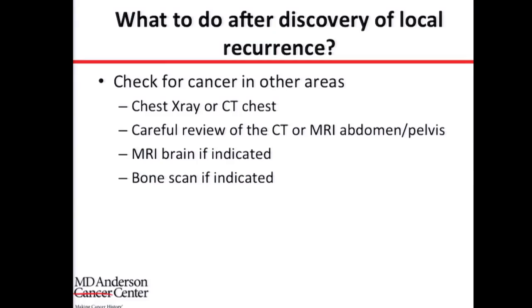Now that we've found a local recurrence, what should we do next? The first thing is to make sure there isn't any cancer anywhere else. We don't just do a CT of the abdomen and rush to surgery. We have to make sure the chest is clear — either a chest X-ray or CT of the chest to rule out metastases in the lungs.